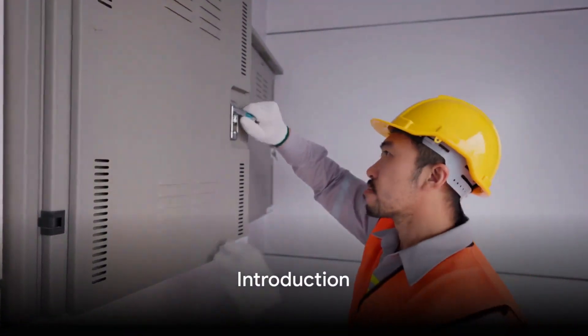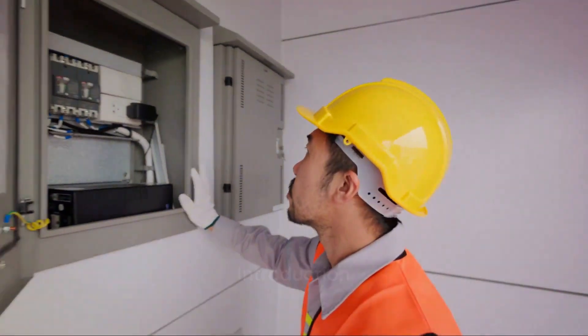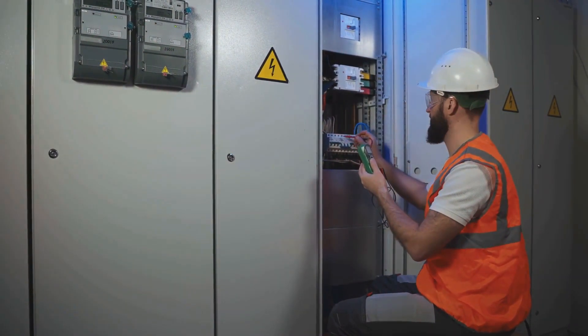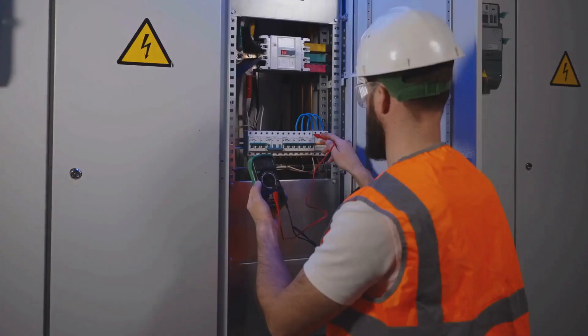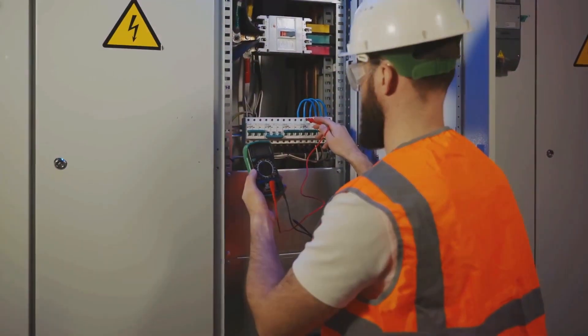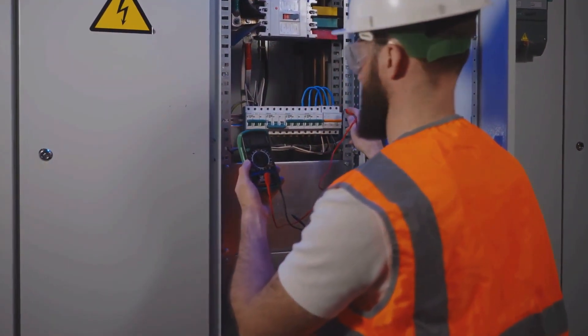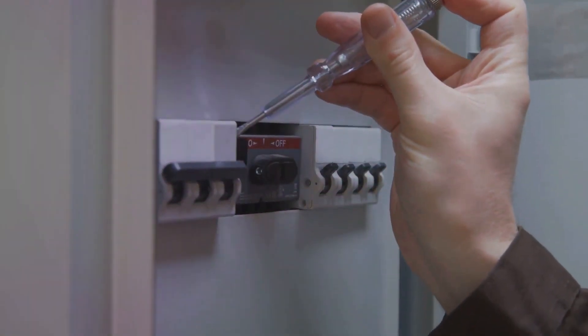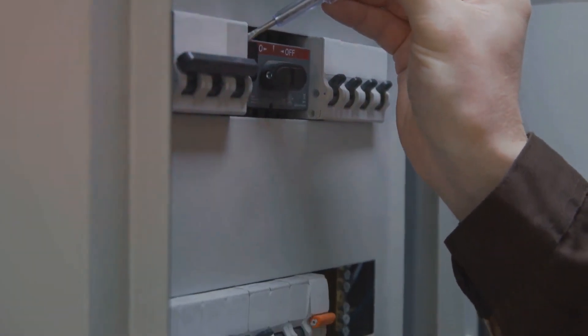Do you know the differences between RCCB, ELCB, MCB and MCCB? It might sound like a riddle, but these four abbreviations represent vital electrical components that safeguard our circuits and devices. Today, we're going to delve into each one, exploring their functions and differences.